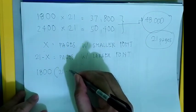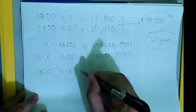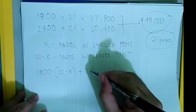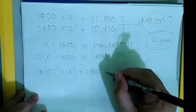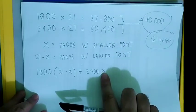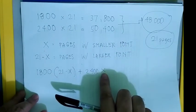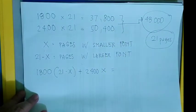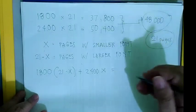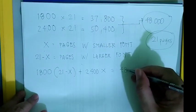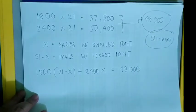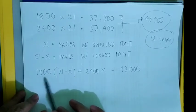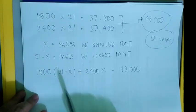So our equation is: 1,800 times (21 minus x) plus 2,400 times x pages — we don't know yet, we will solve for x — and this total should exactly equal 48,000 words. This gives us the total number of words in large font plus the total number of words in smaller font.